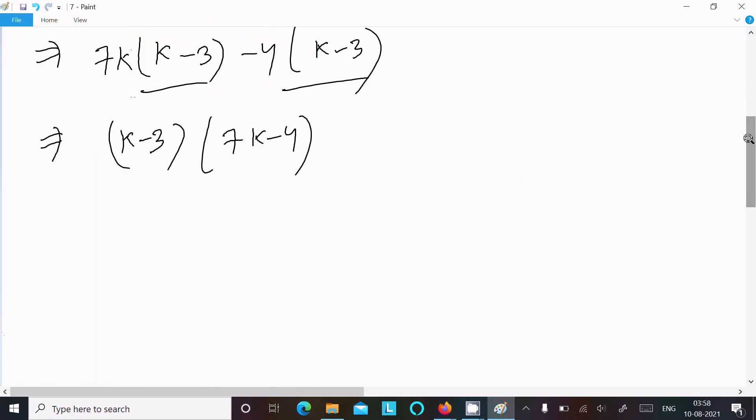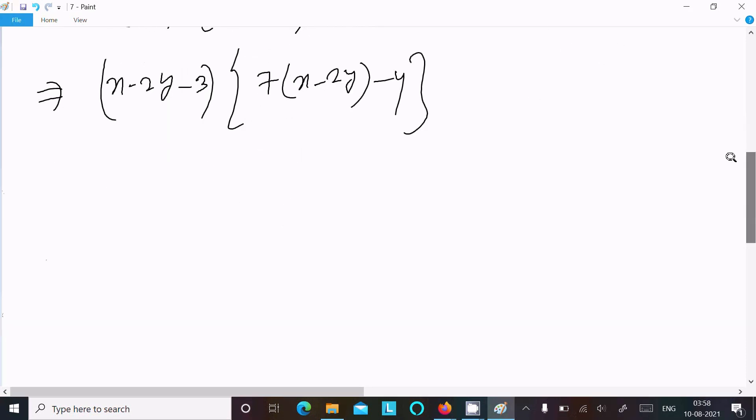So I assume k equal to x minus 2y. So writing here k equal to x minus 2y. Writing in place of k: x minus 2y minus 3, and this here 7 in place of k writing x minus 2y minus 4.